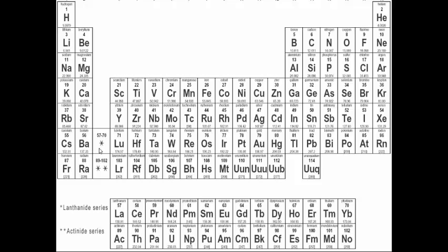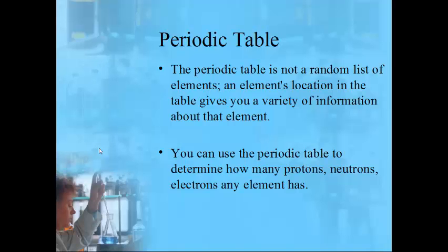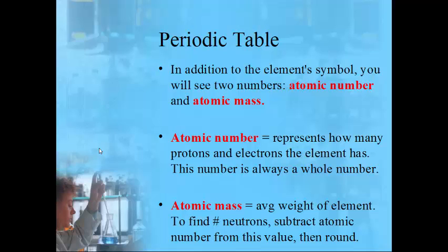In addition to the element's symbol, each entry shows two separate numbers. The atomic number is the whole number — always 1, 2, 3, and so on — and it represents how many protons and electrons that element has. The other number, which usually has a decimal, is the atomic mass, the average weight of that element. To find the number of neutrons, subtract the atomic number from the atomic mass and round to the nearest whole number.